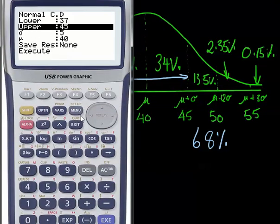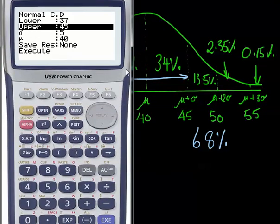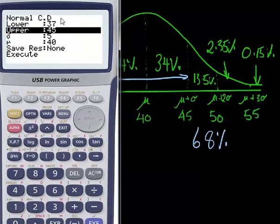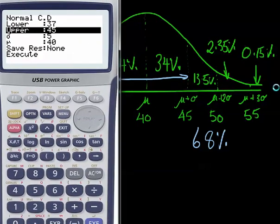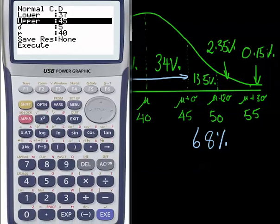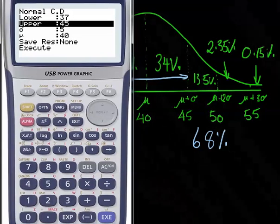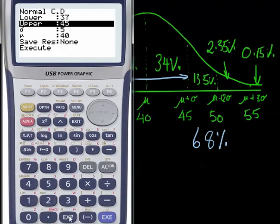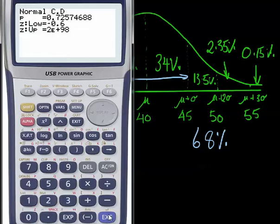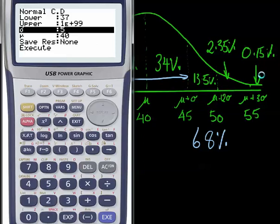Now you might actually be interested in the amount of data that's sitting between the lower value of 37 and the upper value which is basically all the rest of the graph. So we really want to go to something as high as possible for our upper value. And the way you do that is by changing this upper value to exponent 99. So this is a really huge number. We hit execute twice. You can see that we've got 72.5% of the data is sitting between 37 and the top half of the graph.